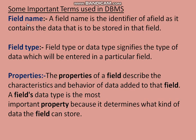Field Name: As seen in our example — role number, name, address, and phone number — these are our field names. A field name is the identifier of a field, as it contains the data to be stored in that field. Field types include numeric and text. Properties: the property of a field describes the characteristics and behavior of data added to that field.